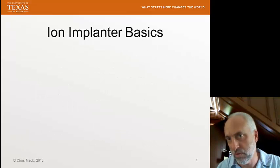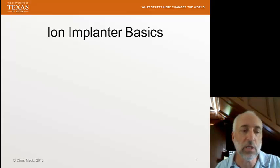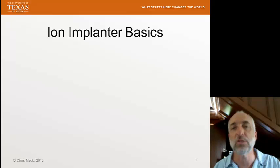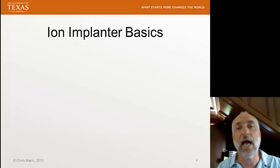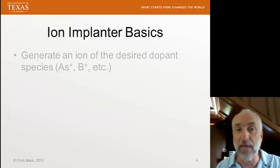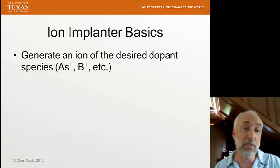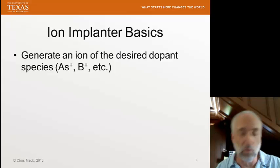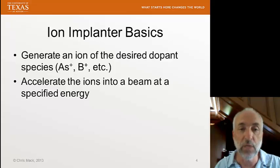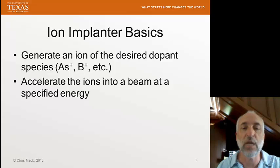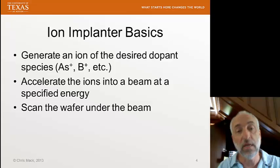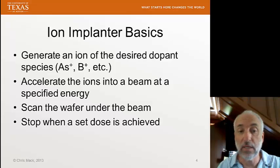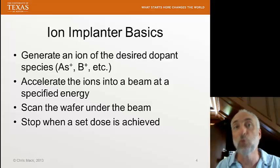Let's look at the tools used in performing ion implantation. In the next lecture, we'll look at the physics of how implantation works in the wafer — what happens to an ion when it hits the wafer. But right now, let's look at how we actually get those ions shooting at the wafer. First, we need to generate an ion of the desired dopant species. They're ionized so that we can accelerate them using a voltage. We accelerate these ions, form them into a beam of the proper shape at a specified energy. Then we scan the wafer under the beam and stop when the dose — the number of dopants per unit area — reaches the set point.